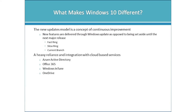That new updates model is a concept of continuous improvement. Instead of waiting until Windows 10 has been deployed and then immediately starting work on the next version, they are going to continually improve this edition of the operating system. New features are going to be delivered through Windows Update as opposed to being set aside until the next major release. From both an enterprise and home standpoint, you can opt into different levels of updates: fast ring, slow ring, and current branch are those levels.